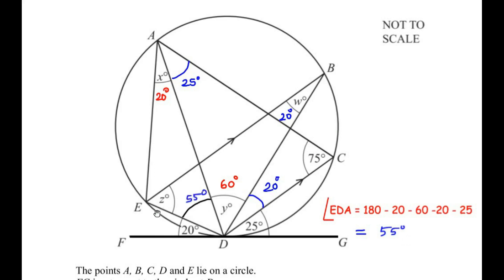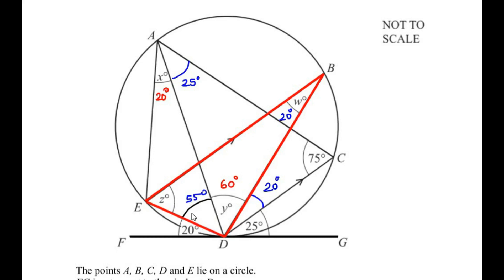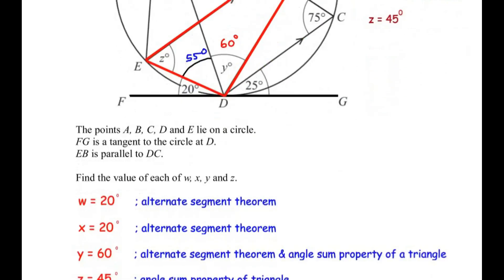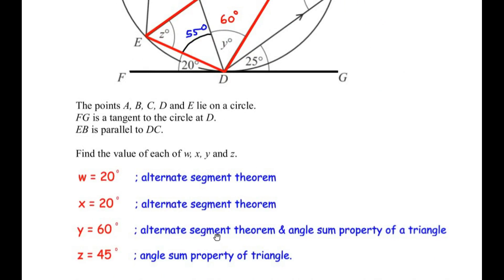Now let us focus on triangle BED. Using the angle sum property of the triangle: angle B plus angle E plus angle D equals 180 degrees. Angle B is 20 degrees, angle E is Z, and angle D is the total of 55 and 60 degrees. Taking the known angles to the other side, we get Z equals 45 degrees. So angle Y equals 60 degrees, obtained using the alternate segment theorem and angle sum property of a triangle, and angle Z equals 45 degrees, obtained using the angle sum property of a triangle.